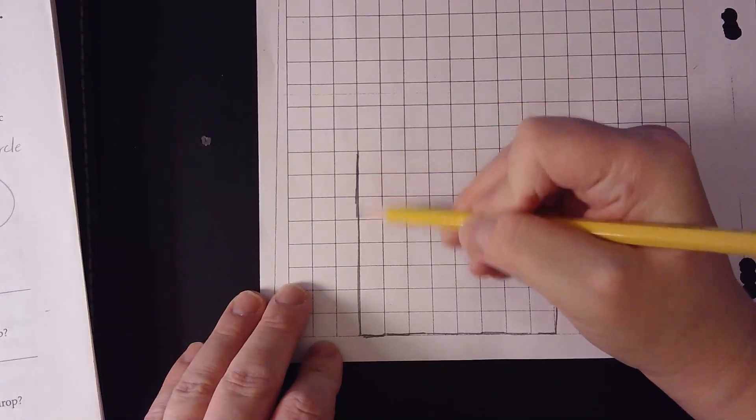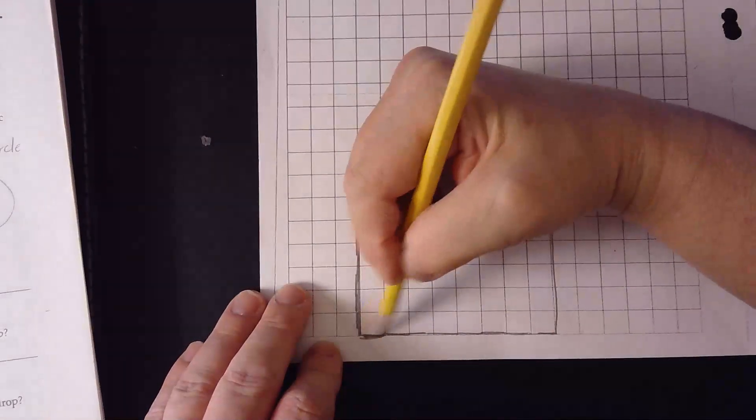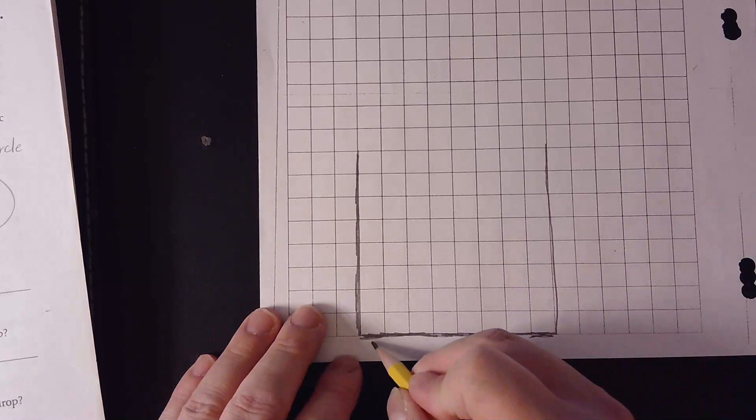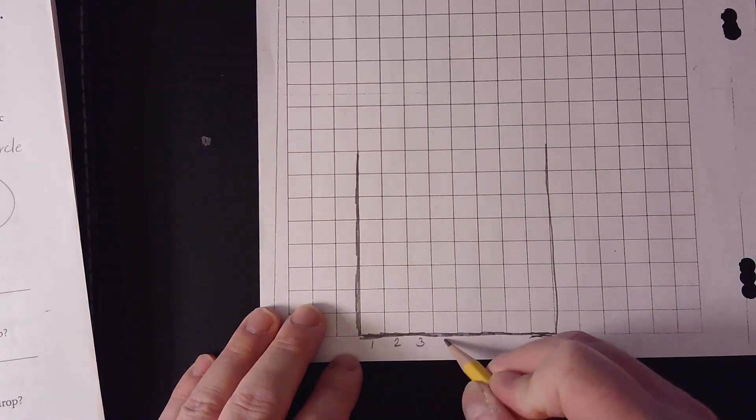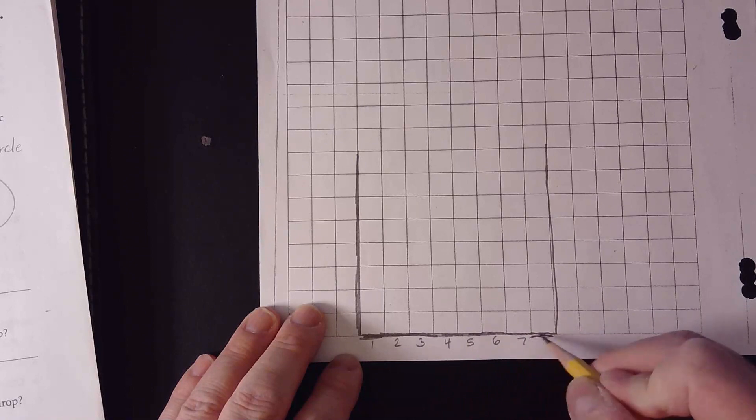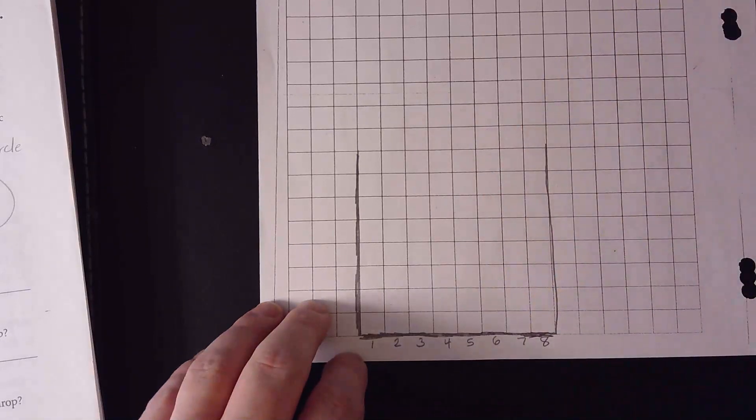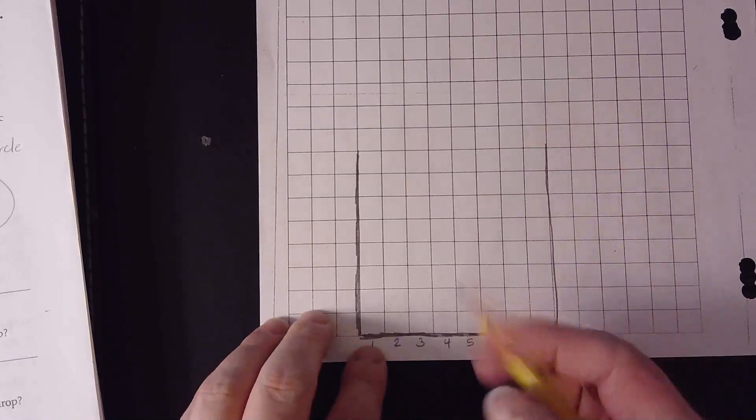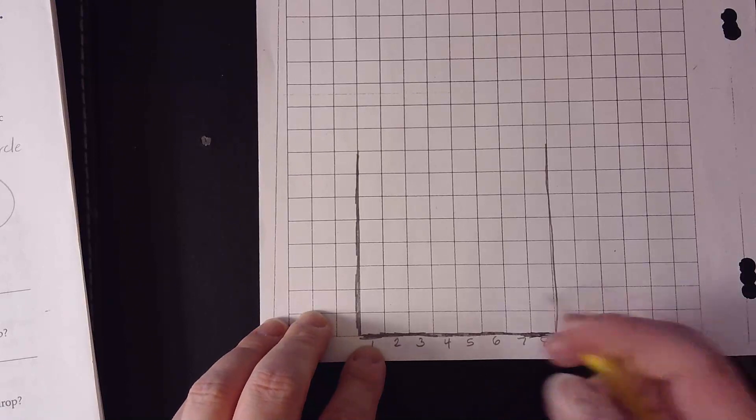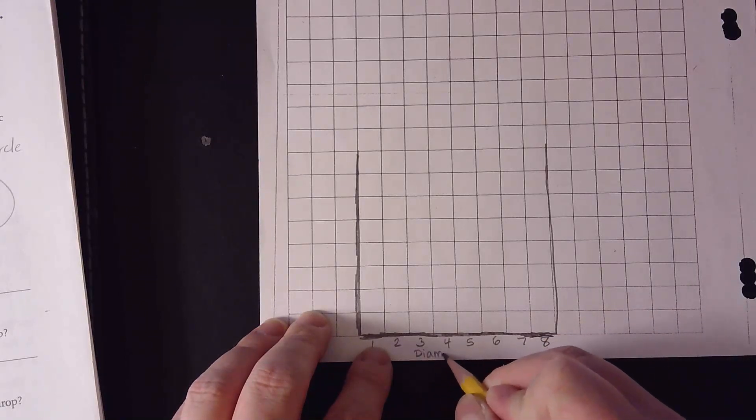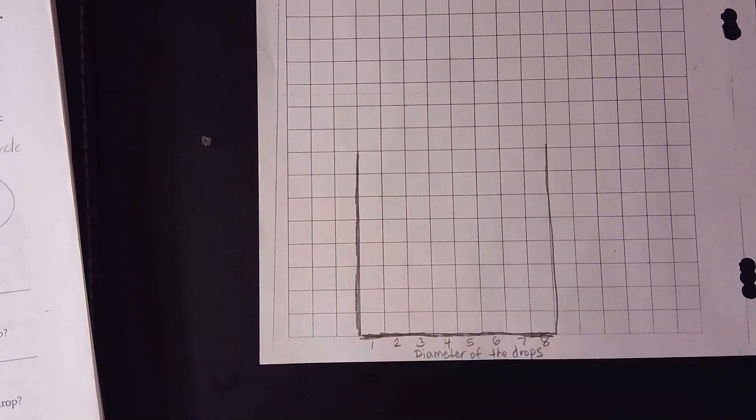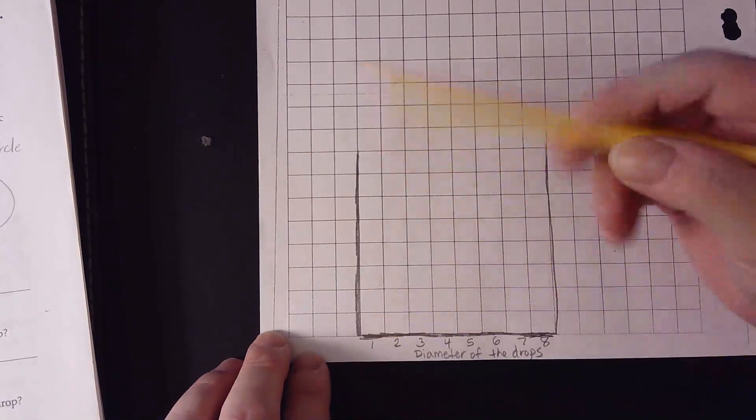Let me make sure we're able to see the graph that we're doing here. At the bottom we're going to put one, two, three, four, five, six, seven, and eight. And what is that? We have to make sure we have a label for our graph. That was the size or the diameter of the drops. So we want to put that at the bottom of our graph and then here on the side of our graph it's going to be the number of drops.